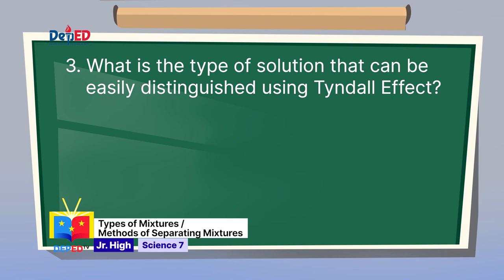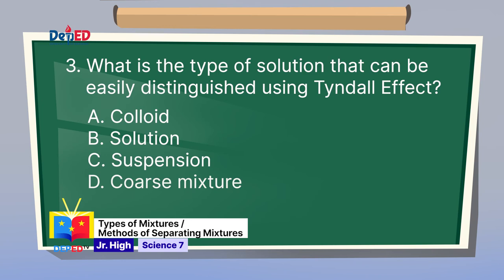Number 3: What is the type of solution that can be easily distinguished using the Tyndall effect? A. Colloid. B. Solution. C. Suspension. D. Coarse mixture. The Tyndall effect is used to determine if a mixture is a solution or colloid, and this effect happens when light passes through a colloidal solution. The correct answer is letter A, colloid.